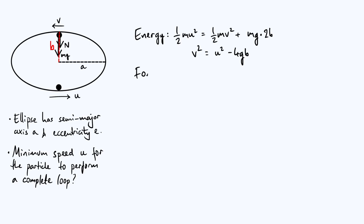Now we consider the resultant force on the particle at the top of the loop. Here is where it starts to differ significantly from the circular case, because it's moving in an ellipse rather than a circle. However, at any given point in the elliptical motion you can approximate its path as a circle — the circle that best approximates the ellipse at that point is called the osculating circle, and its radius is called the radius of curvature r. So we can write the centripetal force as mv²/r.